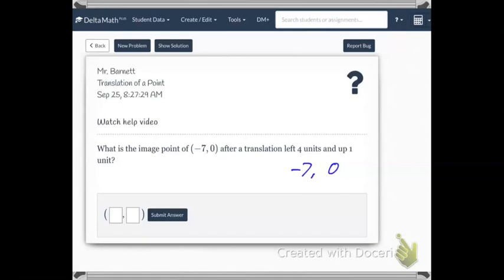And then I'm going to write down my translation. The vector here, which is left 4 units. So if I'm going to the left, that would be negative 4 and up 1, so plus 1. And I'm just going to add this up. So negative 11 and 1. And that is my answer. Negative 11, 1. All right. Super simple.